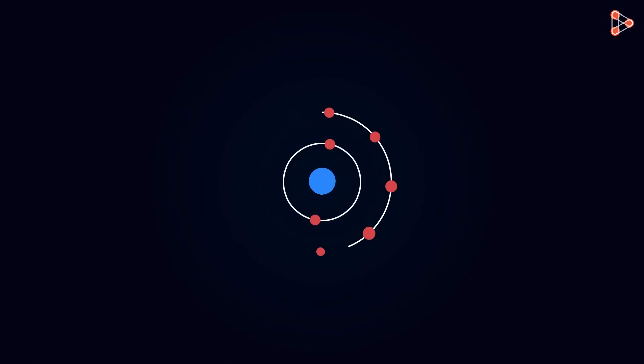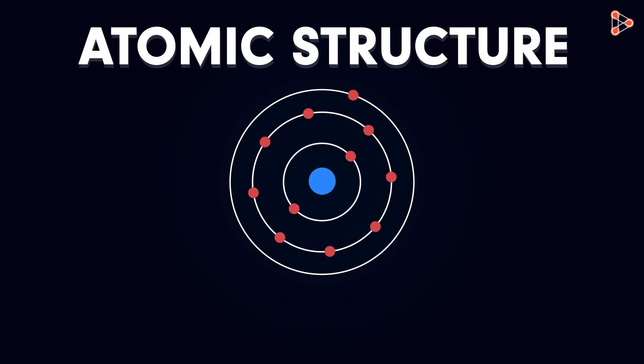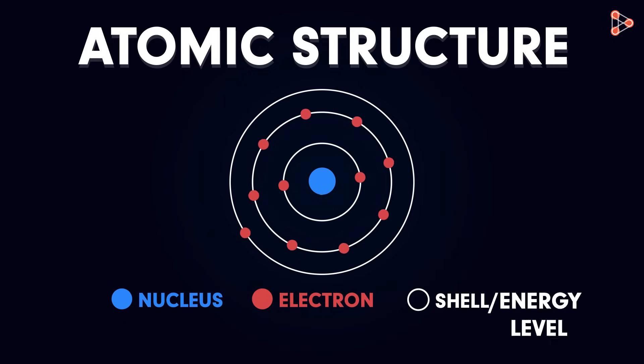In a similar way, we have the atomic structure. The nucleus acts like the Sun located at the center, and the electrons are like planets which revolve in fixed defined orbitals. These electron orbitals are referred to as shells or energy levels.